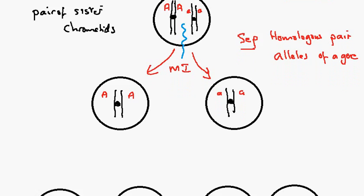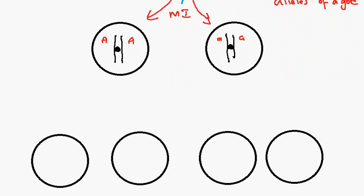The next stage involves each of these cells dividing once more. We can call this meiosis two, and here we have the separation of the chromatids.